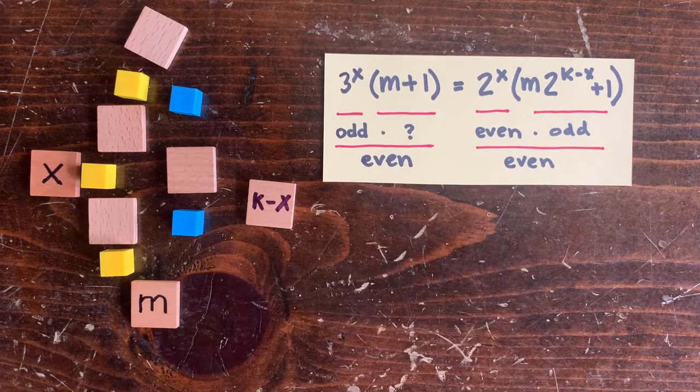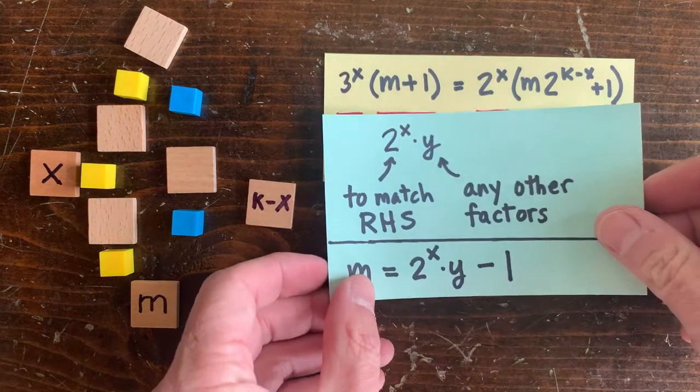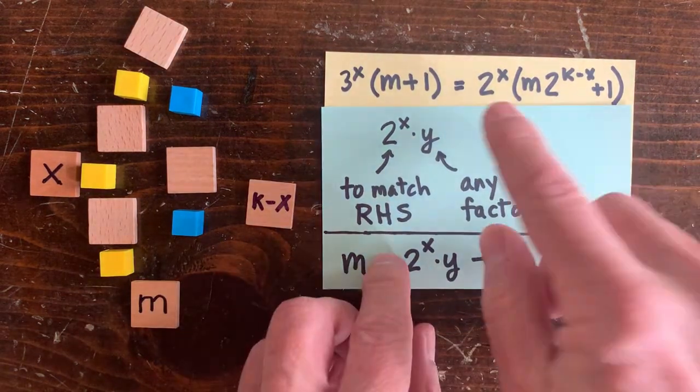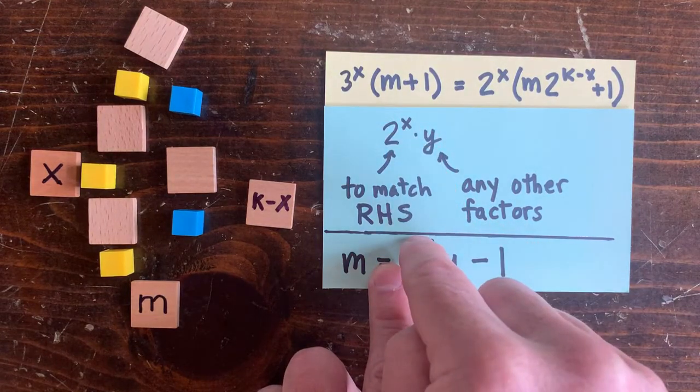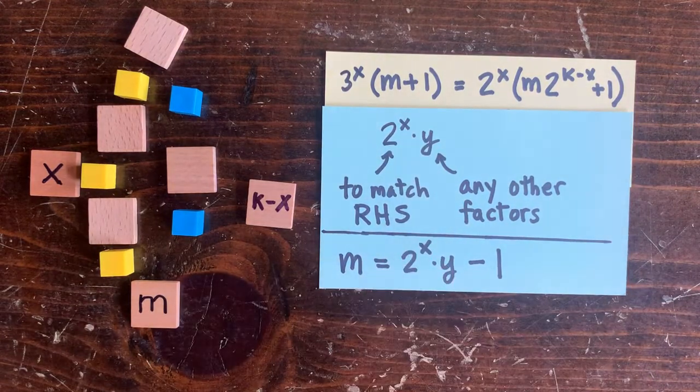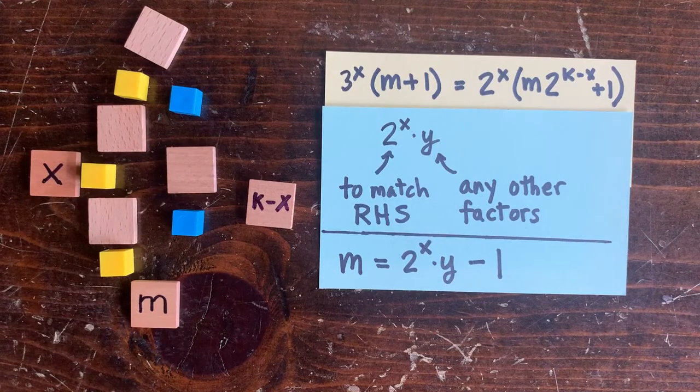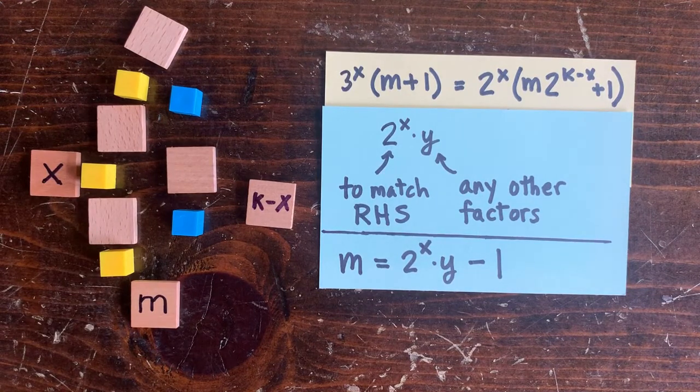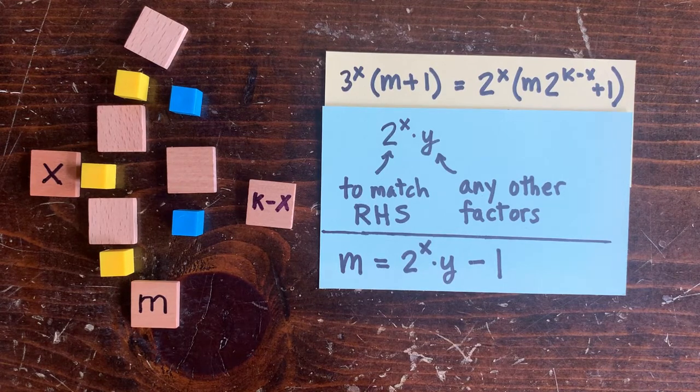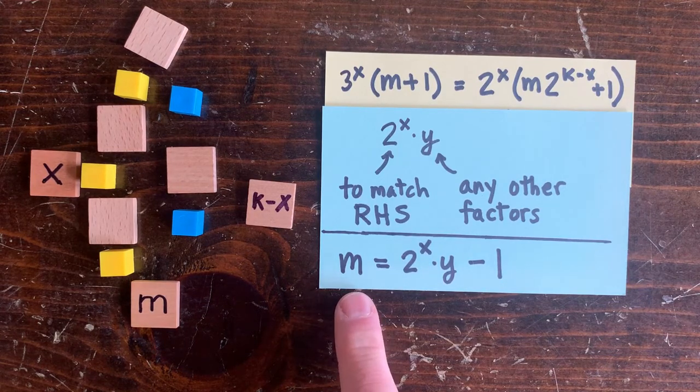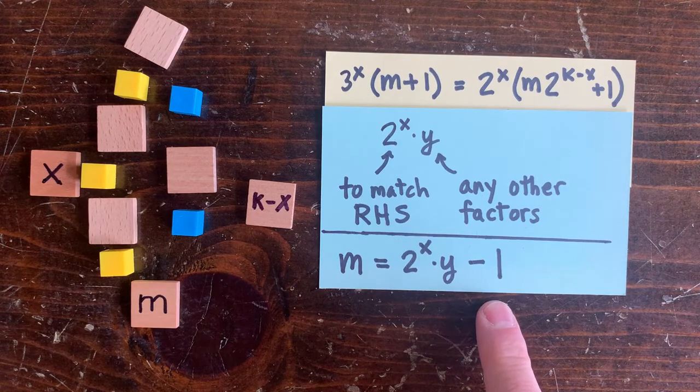What else can we conclude about m? Well, the right-hand side has a bunch of factors of 2, x of them. So the left-hand side also needs those factors of 2. And it looks like m plus 1 is going to have to provide them because its buddy 3 to the x isn't going to. So m plus 1 has to be 2 to the x times some value of y, which might be 1. So m equals 2 to the x times y minus 1.